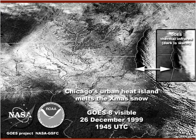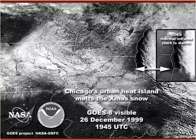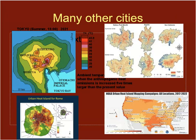But it's not just Tempe. Look at this aerial shot of Christmas snow in 1999 for Chicago — you can see the urban heat island where the snow is melted because of the city's heat. And it's not just Phoenix, Tempe, and Chicago. Look at Tokyo on the upper left, Rome on the lower left, various Texas cities in the upper right, and all of the urban heat island mapping campaigns from 2017 to 2022 throughout the conterminous U.S. and Hawaii. It's a global problem — there are a lot of thermometers in all of these cities.